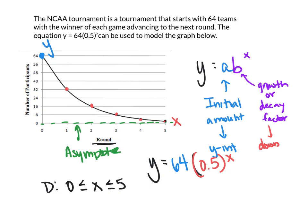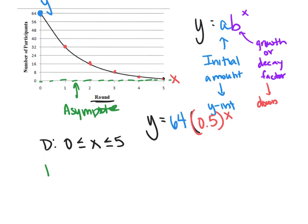So our range is gonna go from, well, since you can't go below 0 and since you can't have 0 teams. Remember we can't have 0 teams. That's an asymptote.